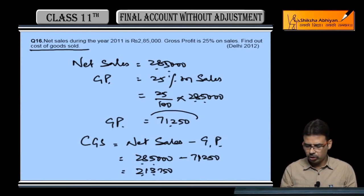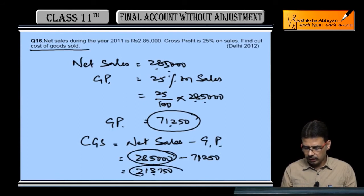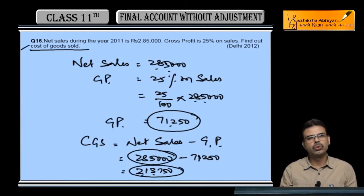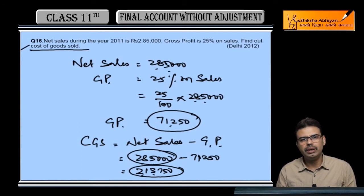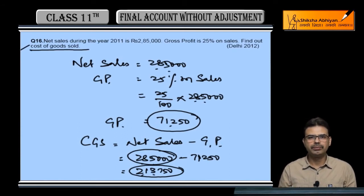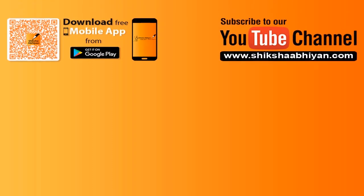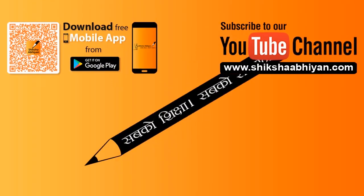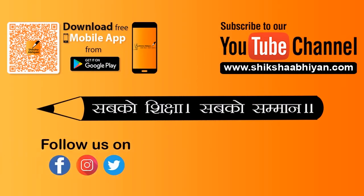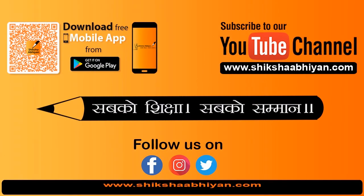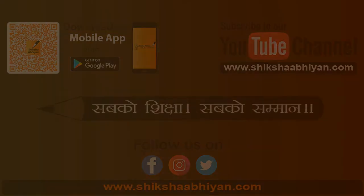You have the gross profit and the sales figure is given, so from those you can derive cost of goods sold.